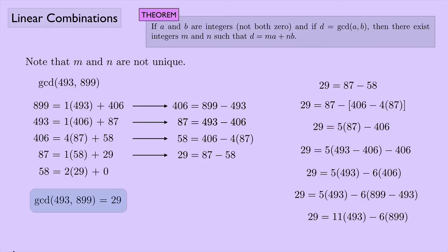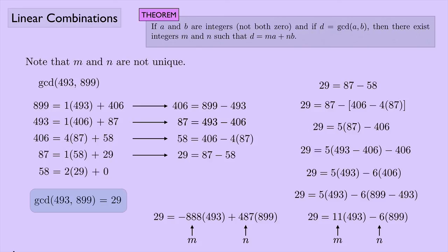Here, 11 plays the role of m and negative 6 plays the role of n. But you can verify that another valid linear combination is m equals negative 888 and n equals 487. The theorem says it's possible to express the GCD as a linear combination of a and b, but m and n are not unique — there's more than one way to do it. This idea might not seem profound, but it turns out to be very helpful in many proofs in abstract algebra, and we'll see it come up again and again.